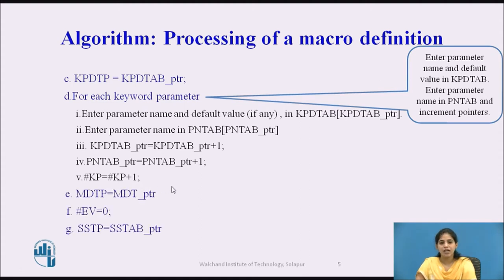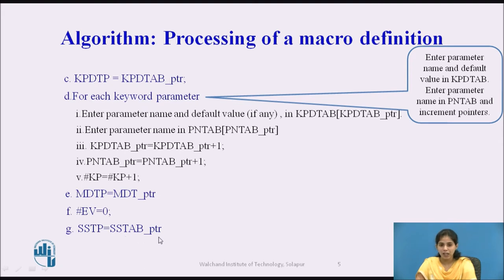In the E part, we assign the Micro Definition Table pointer value to the MDTP variable, which appears in the MNT table. In the F part, the number of expansion time variables is stored in the hash EV variable, which is assigned the value 0. In the G part, we assign the Sequencing Symbol Table pointer value; this pointer variable also appears in the Micro Name Table.